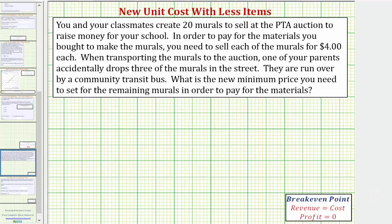You and your classmates create 20 murals to sell at the PTA auction to raise money for your school. In order to pay for the materials you bought to make the murals, you need to sell each of the murals for $4 each.